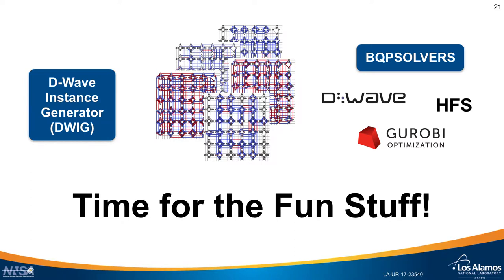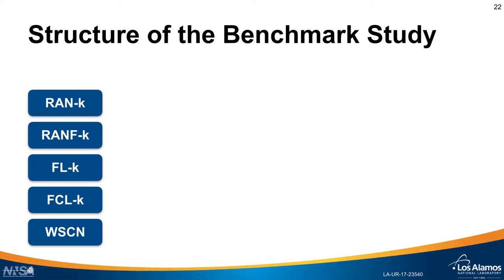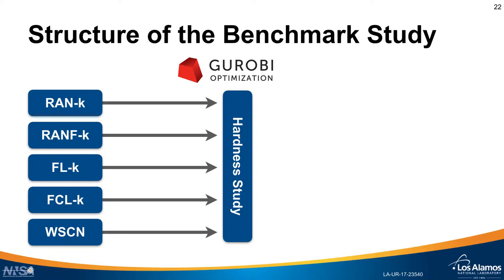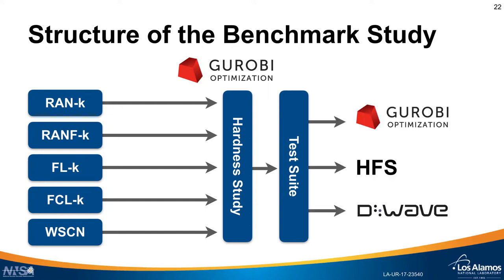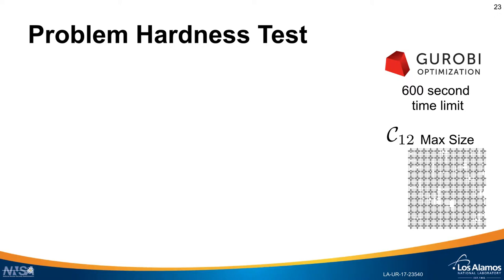Now we're done with the introductory material — it's time to compare these different instances on the three algorithms. The benchmark study has five different problem classes previously introduced. The first step is to determine which problems are actually challenging: we use Gurobi as a baseline established tool to measure how fast it solves each problem class. Based on which ones are actually difficult, we build a test suite of hard problems and then run those on HFS, Gurobi, and D-Wave.